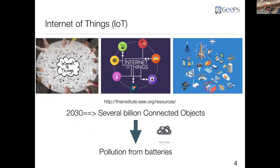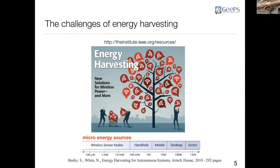The context for this work is the Internet of Things, because we have a lot of connected objects and the consequence is pollution concerning batteries. In this context, the challenge is energy harvesting. We have two solutions: use ambient environmental sources or the wireless power method. The objective for each energy harvesting system is to connect different objects like a micro energy source.